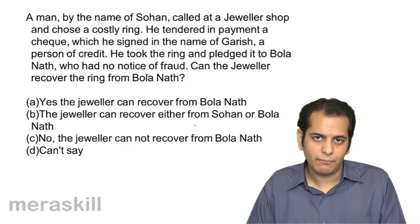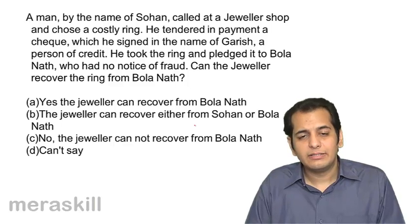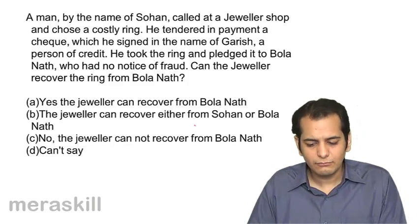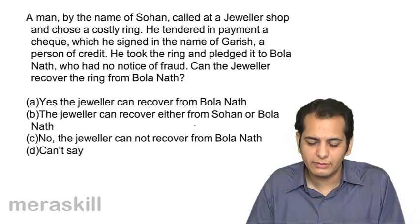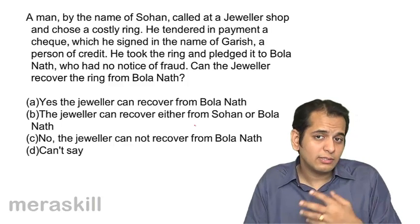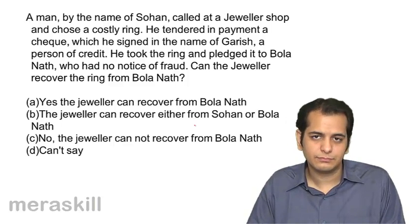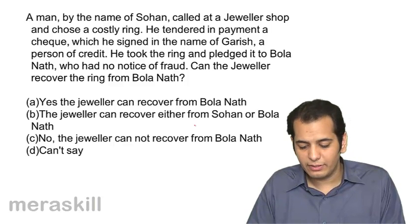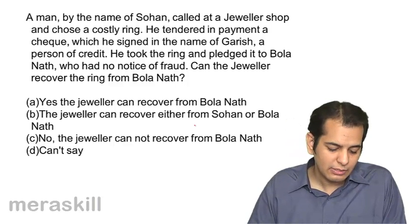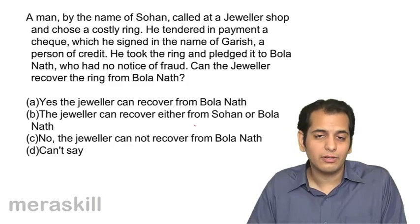Sohan committed fraud — he purchased the ring under the name of Garish, a wealthy person with good credit worthiness in the market, and wrote a cheque in Garish's name. This is forgery of a cheque. He then pledged the ring with Bolanath, who did not know the ring was obtained by fraud. The options are: A: Yes, the jeweler can recover from Bolanath. B: The jeweler can recover from either Sohan or Bolanath. C: No, the jeweler cannot recover from Bolanath. D: Can't say. The answer is C.